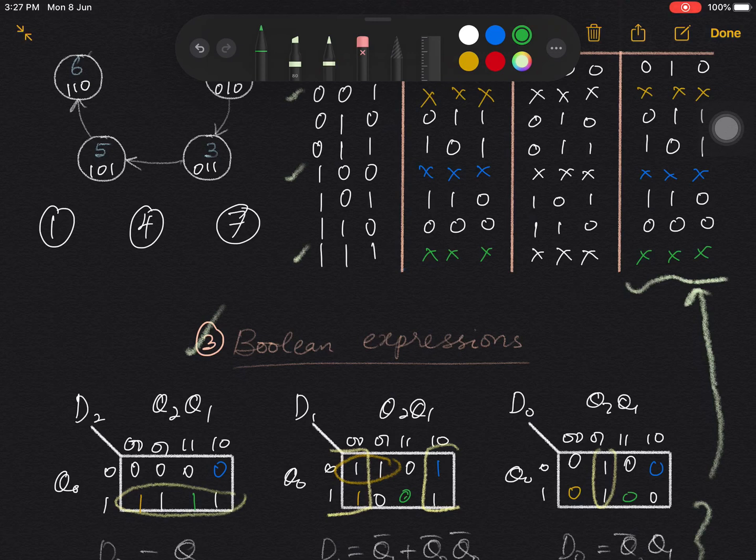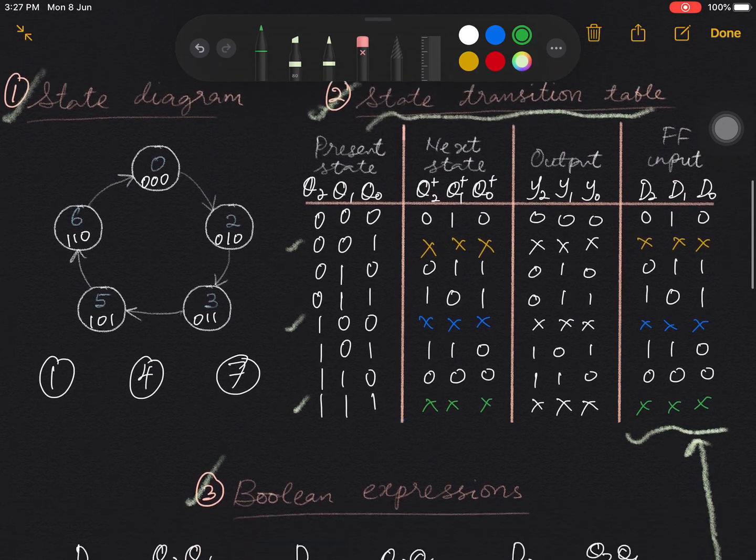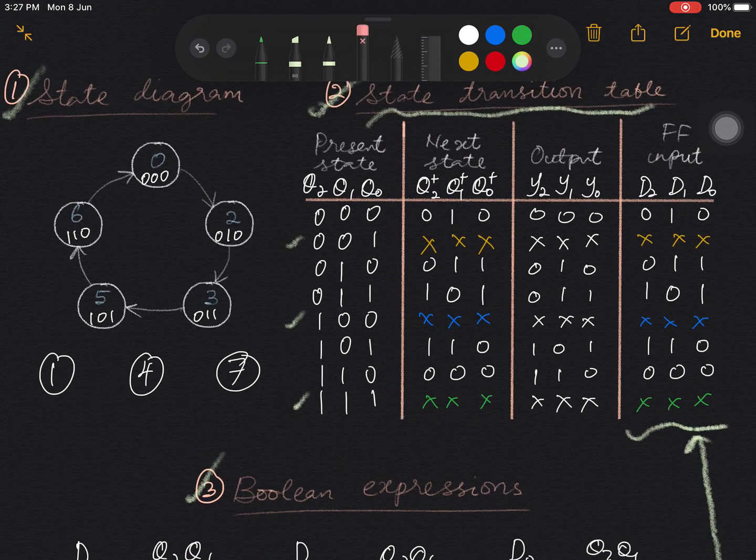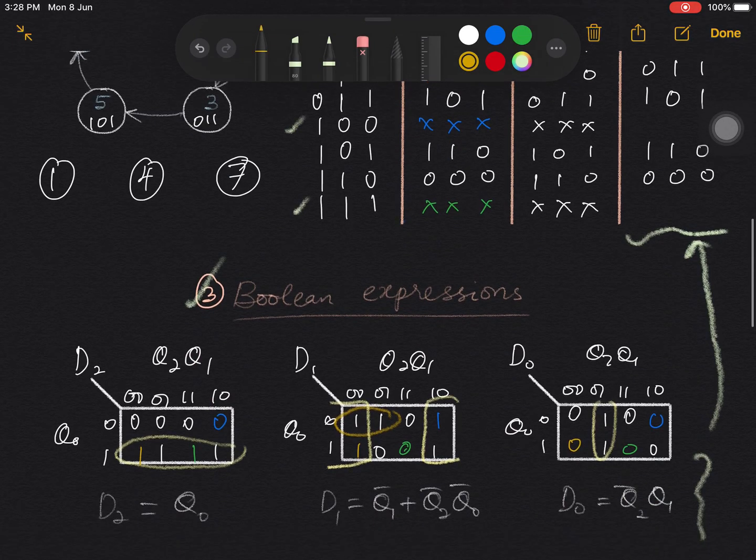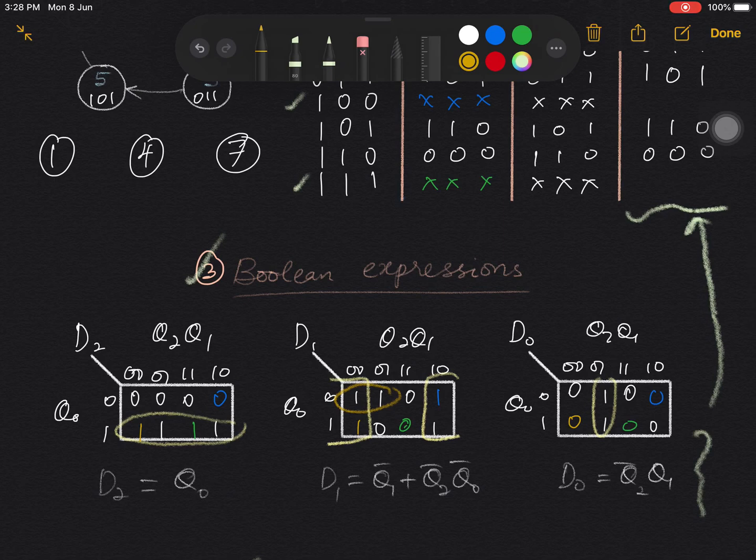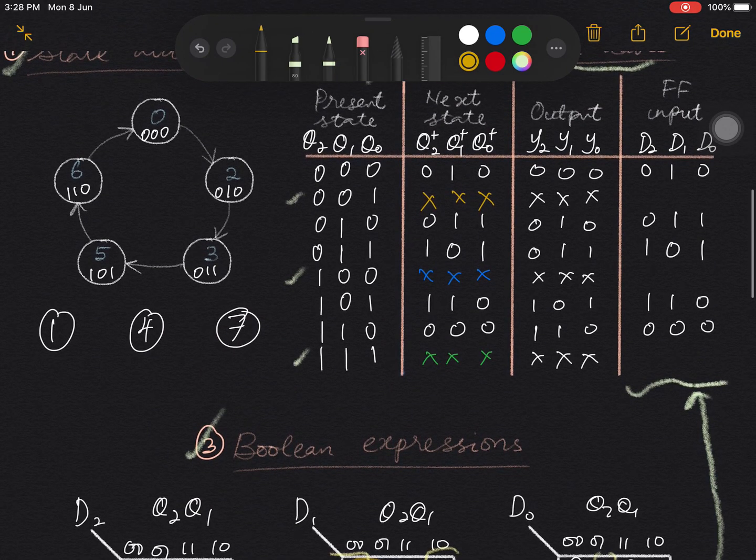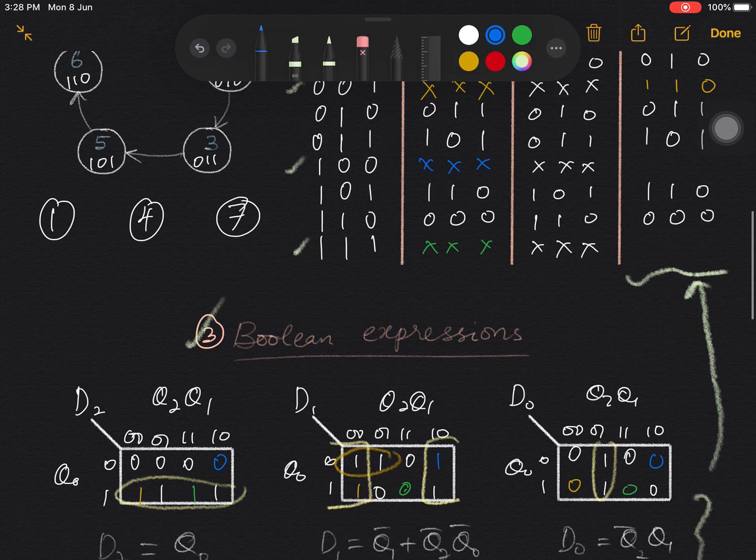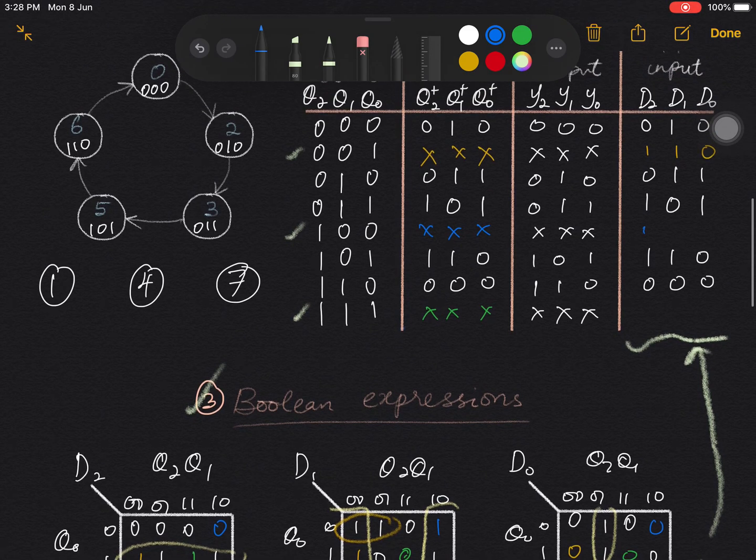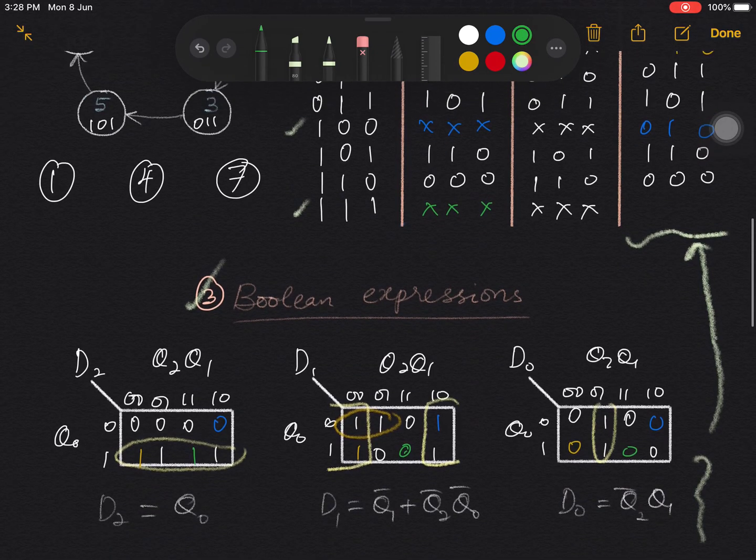So using these values, we can update the flip-flop column of the state transition table. So that yellow don't care now becomes 1, 1, 0. The blue don't care becomes 0, 1, 0. And the green don't care becomes 1, 0, 0.